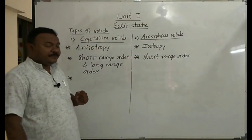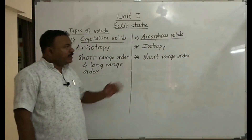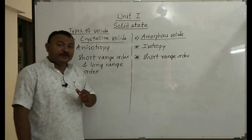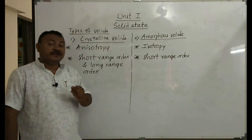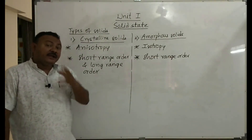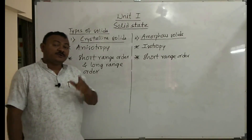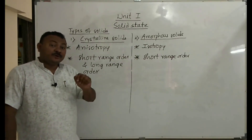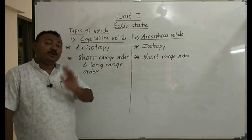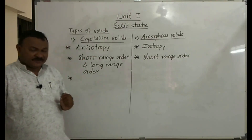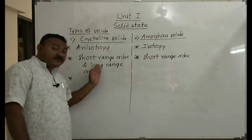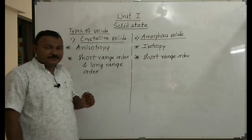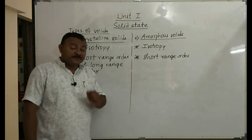Crystalline solids show a sharp melting point. For example, if a pure crystalline solid has a melting point of 180°C, it melts exactly at 180°C. Amorphous solids show a range of melting points — for example, 180 to 185°C. When we cut a crystalline solid with a sharp-edged tool, we get pieces with a smooth surface, whereas amorphous solids form pieces with a rough surface.